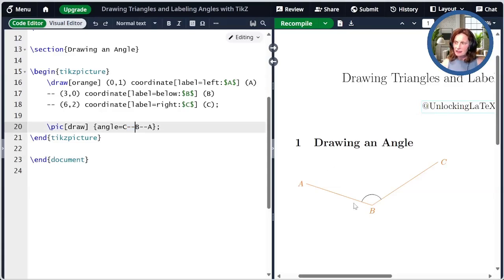By default, the distance of this angle out here, so this distance and this distance is five millimeters. We can change that with the angle radius option. So here I'm going to specify an explicit distance of three millimeters. So look at it now, and then after I recompile it, that angle is now only three millimeters away.